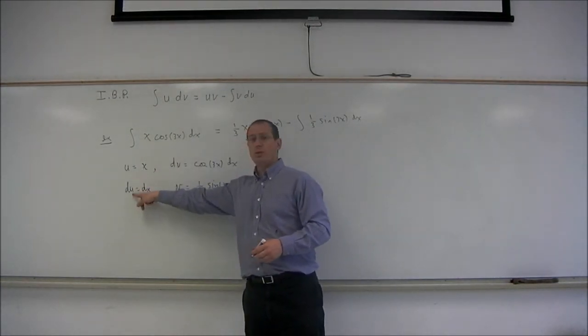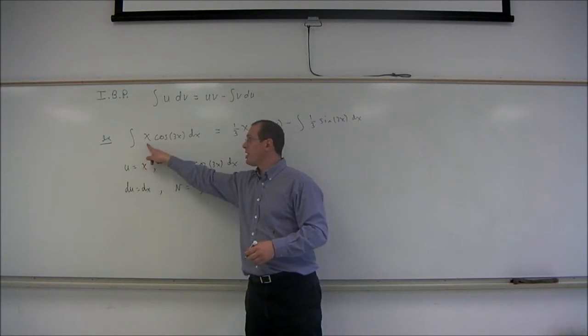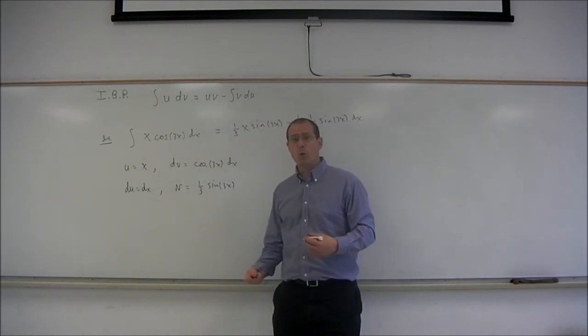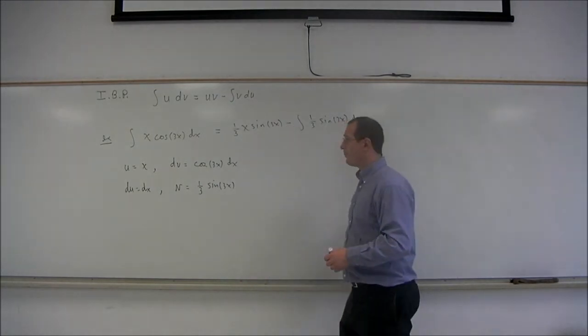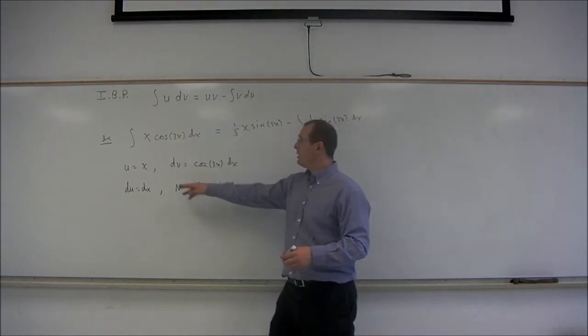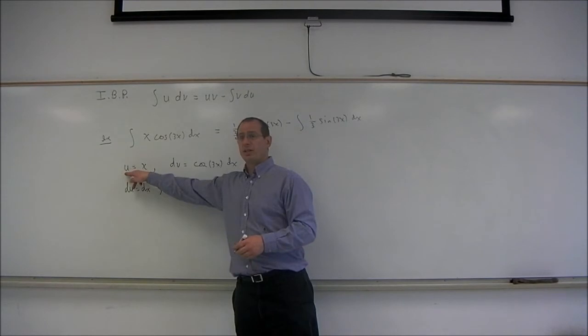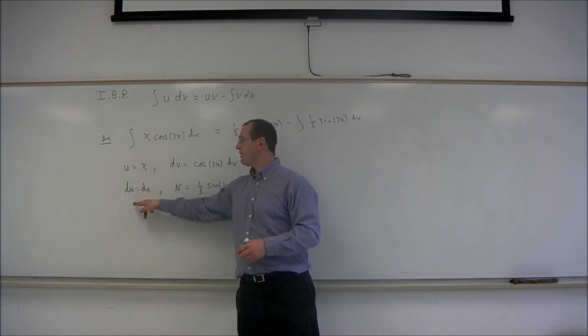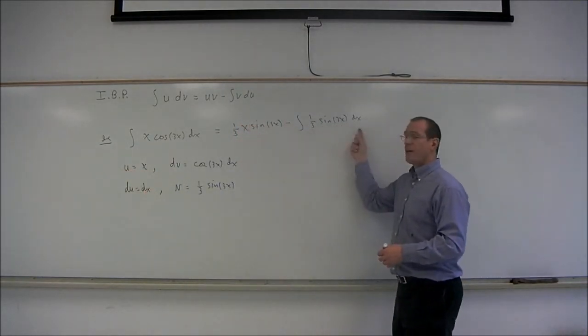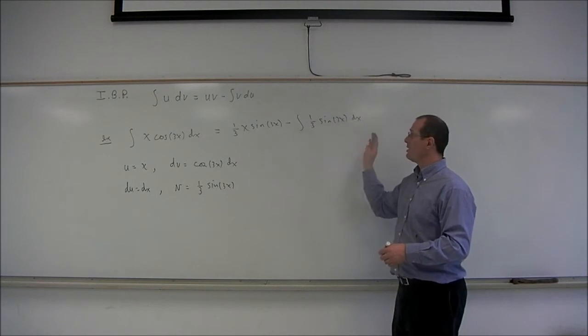Our choice, u equals x, caused that to disappear when we took the derivative. du became 1 dx. So that's the motivation for our choice, u equals x. Its derivative is 1, so in the follow-up integral, the x has disappeared.